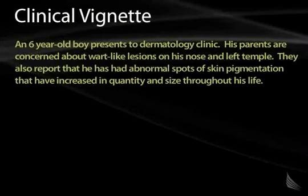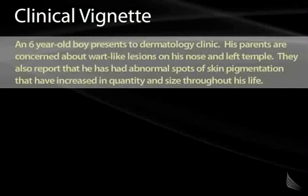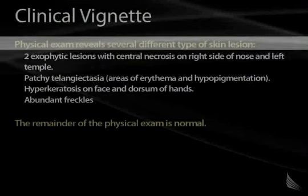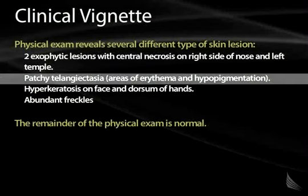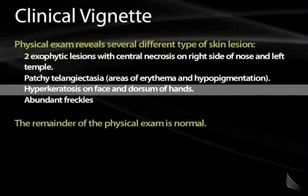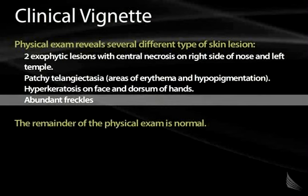There are things that can go wrong with DNA excision repair. The following clinical vignette illustrates a disease resulting from defective mismatch repair mechanisms. A six-year-old boy presents to a dermatology clinic. His parents are concerned by wart-like lesions on his nose and left temple, and report abnormal spots of skin pigmentation that have increased in quantity and size throughout his life. Physical exam reveals two exophytic wart-like lesions with central necrosis on the right side of his nose and left temple, patchy telangiectasia, hyperkeratosis on his face and dorsum of his hands, and abundant freckles all over his body.